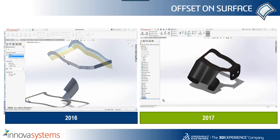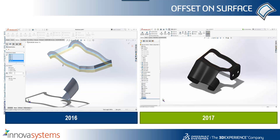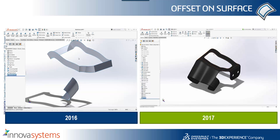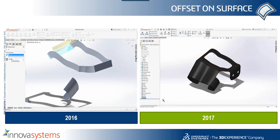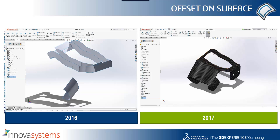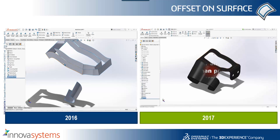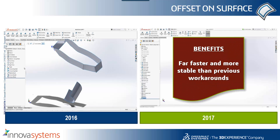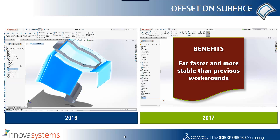You'll see whilst I've been talking, in 2017 using offset on surface we've actually finished the command, whereas in 2016 we're in the process of extending a surface which will now offset internally and then we'll use some trim tools to remove the internal detail. You can see some really nice speed improvements straight away. In summary, it's far faster and more stable than previous workarounds.